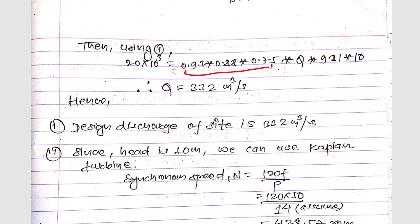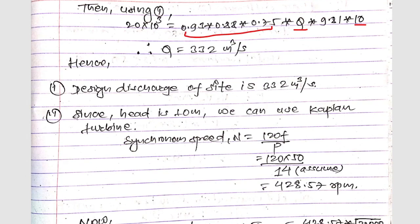We calculate the discharge Q with g = 9.8 m/s² and head H = 10 meters. From this we get Q = 332 m³/s.